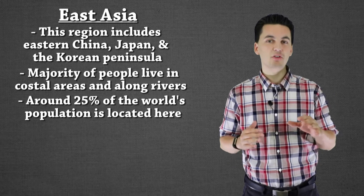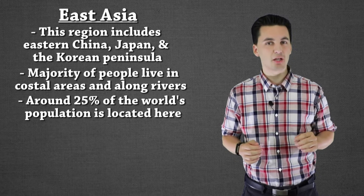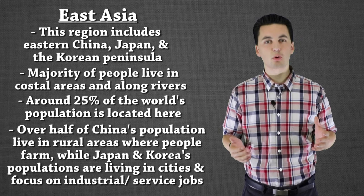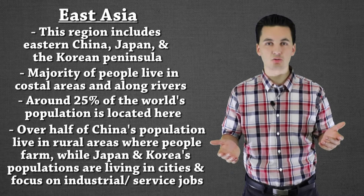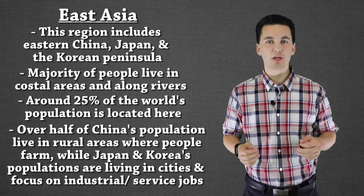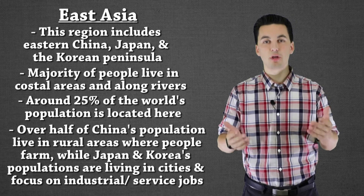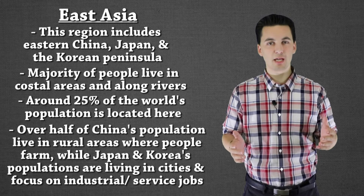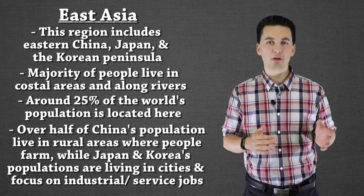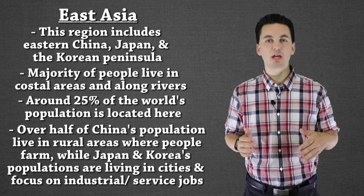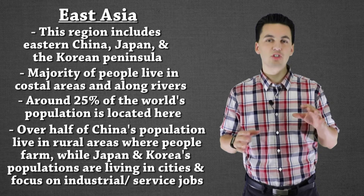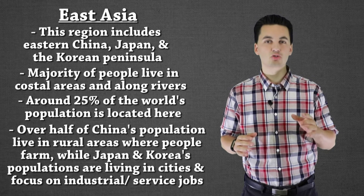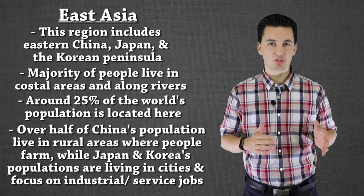We see a lot of different things happening with the economies, and it actually depends on urbanization. In China, where we have more rural communities, we're seeing the economic driver be agriculture — a lot of people are farmers and that is what they focus on for their careers. However, in Japan and Korea, where there's a lot less space and more urbanization, we've seen a shift from agriculture into service jobs and industrial jobs. We've also seen in this area some control over populations, with China in particular.